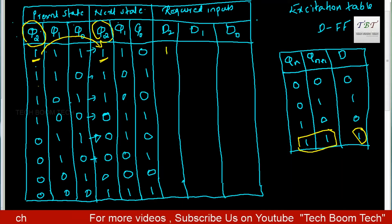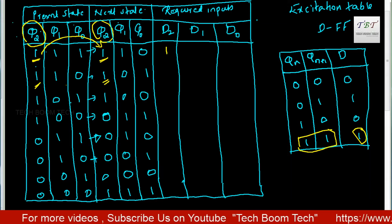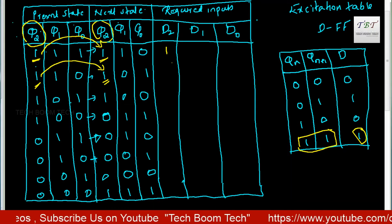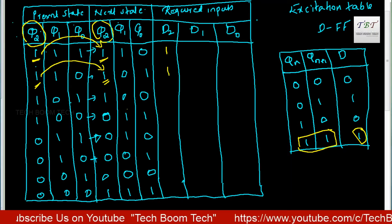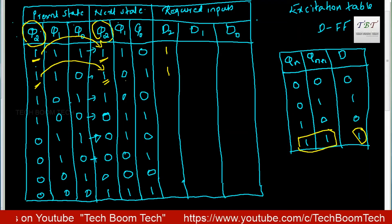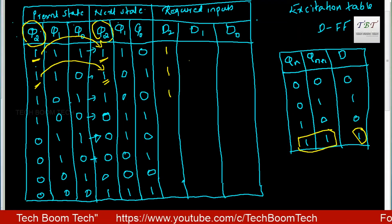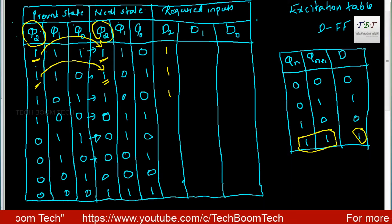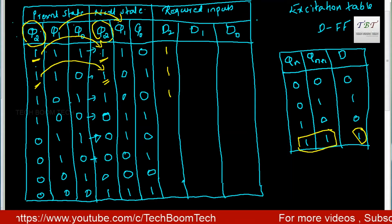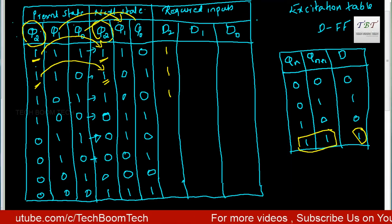Again, the second case: Q2 is 1, next state Q2 is 1. So for a 1 to 1 transition, D is 1. Fill all the values of D2. Then we need a transition for Q1 to Q1, and then Q0 to Q0.